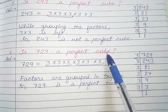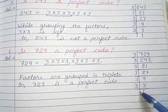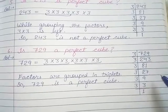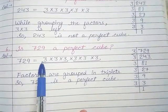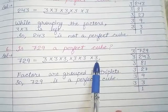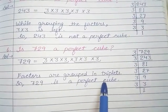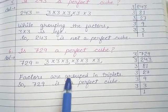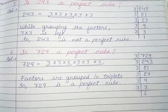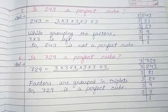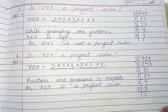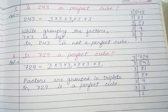As you have done in your previous chapter, we will find out by factorization. Now you have to see if the triplet is completely made. 729 is a perfect cube because factors are grouped in triplets completely. So students, you have to solve the 7th and 8th parts yourself. Try it.